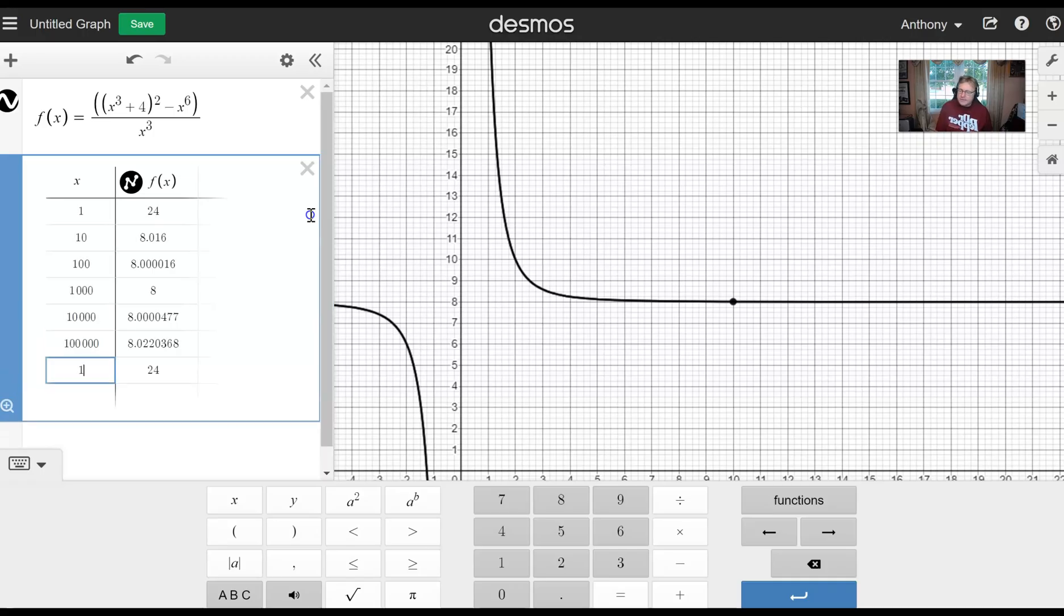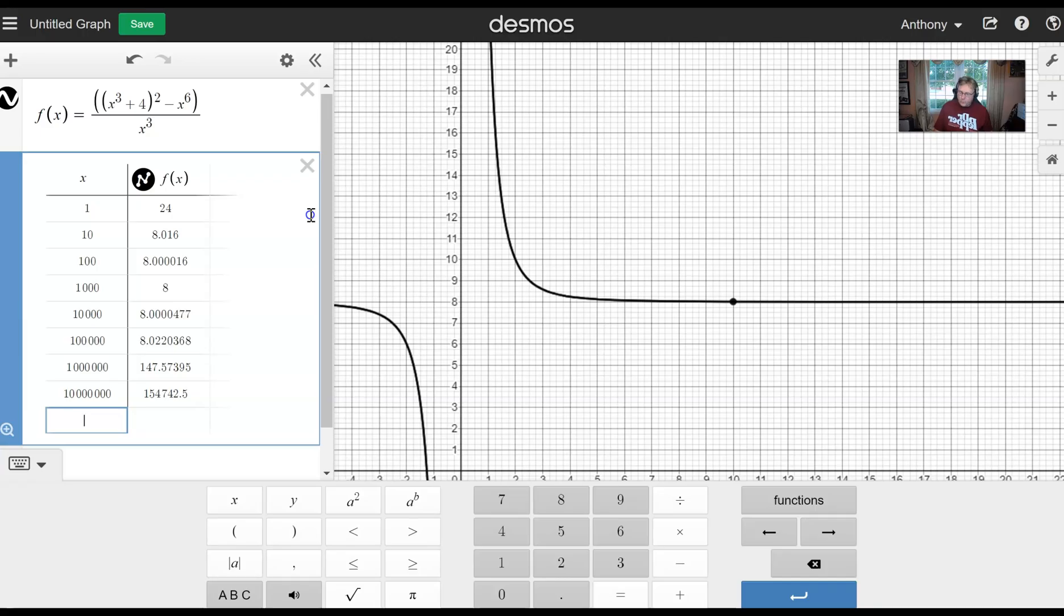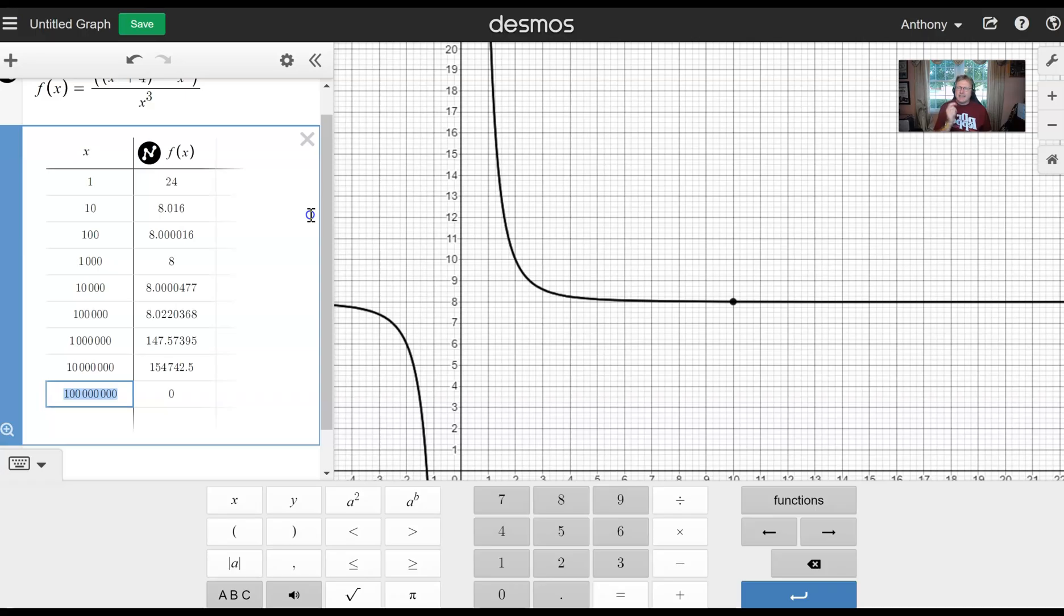Now I'm ready for a million. All right, let's go for 10 million and then 100 million. Don't you like how Desmos put spaces between three pairs of those zeros? Otherwise we'd be counting all day. And then finally with one billion in our x column, and there you go.